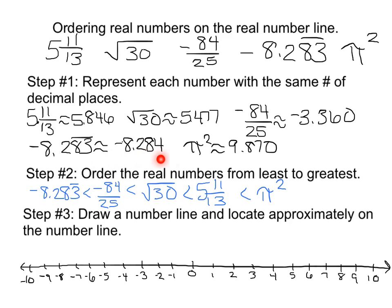I'm going to use the decimals that I found to help me place them accurately on my number line. My first one I'm going to start with, I'm going to start with my lowest number. And I'm going to place that at a negative 8.284.